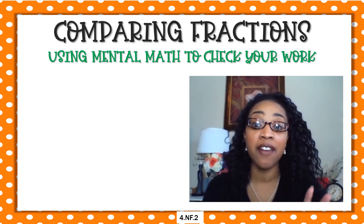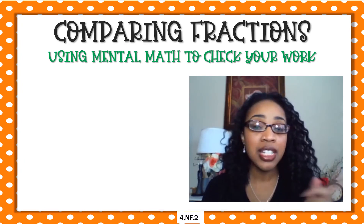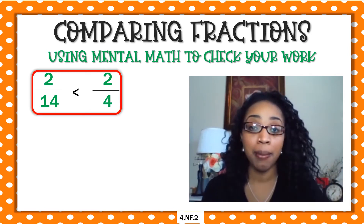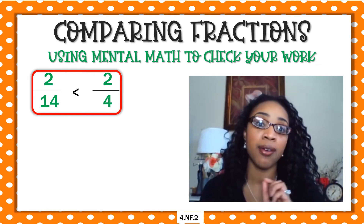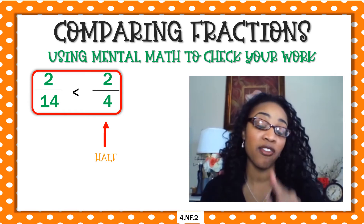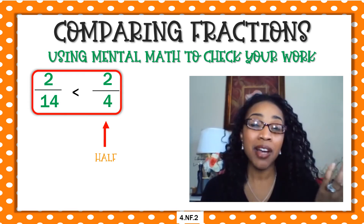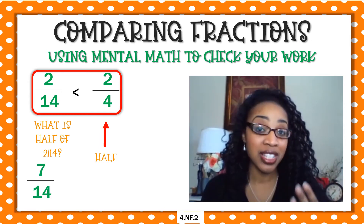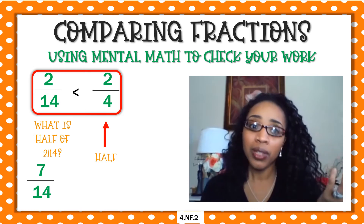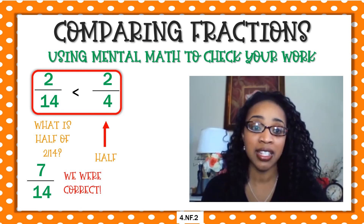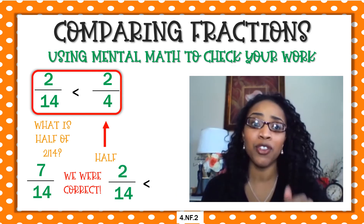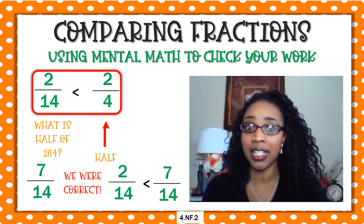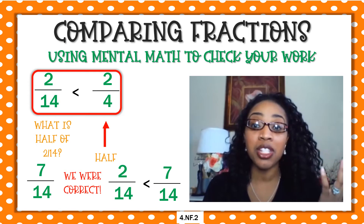Let's use our mental math to check our work. We got that two fourteenths is less than two fourths. I know my benchmark fractions, so I know that two fourths is half because it falls halfway on my number line. So now I just have to figure out what is half of two fourteenths — well, seven fourteenths, because half of fourteen is seven. Now I just compare two fourths and seven fourteenths. Two fourths is less than seven fourteenths, so two fourteenths must be less than two fourths because it's not the same as a half. So now we just used mental math to check our work.